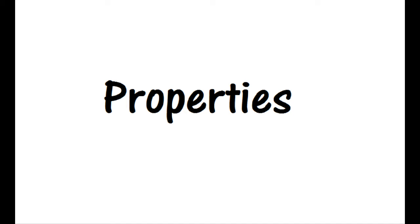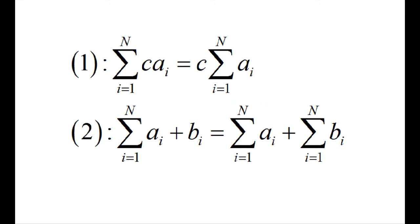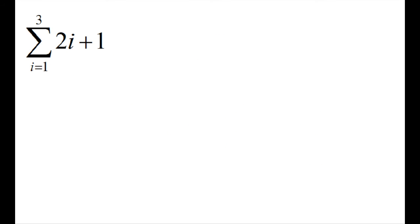So now let's go over some useful properties of summation notation that you'll run into a lot. The first property simply says that you can take out a constant multiple out of the summation. The second property says that the summation of a sum is equal to the sum of the summations, or you can break up sums into multiple summations as shown. So let's go back to our original problem and solve it by using the properties we just went over.